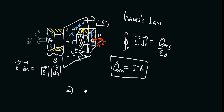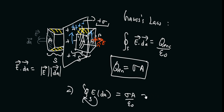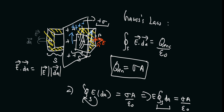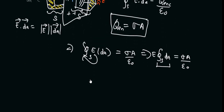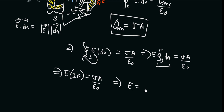Finally, Gauss's law gives us the integral of the magnitude of the electric field times the area dA, equal to sigma A divided by epsilon naught. Since the electric field is constant, we can take it outside the integral, giving E times the surface integral of dA equal to sigma A over epsilon naught. The surface integral of dA is the area of the top cross-section A plus the area of the bottom cross-section A, so we get E times 2A equals sigma A over epsilon naught, giving E equals sigma divided by 2 epsilon naught.